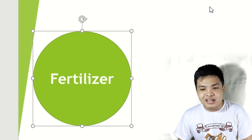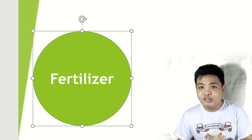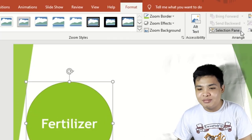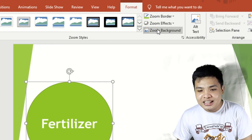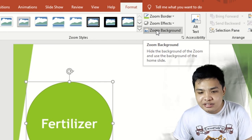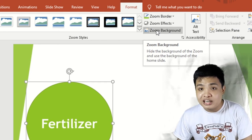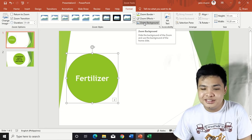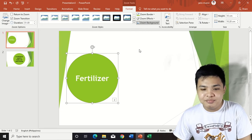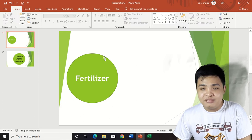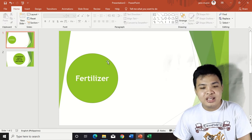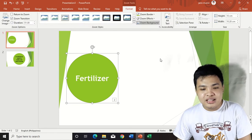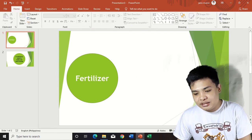It looks bad, so what we are going to do is click Format and then click Zoom Background — this removes the background border. Okay, it's gone now.